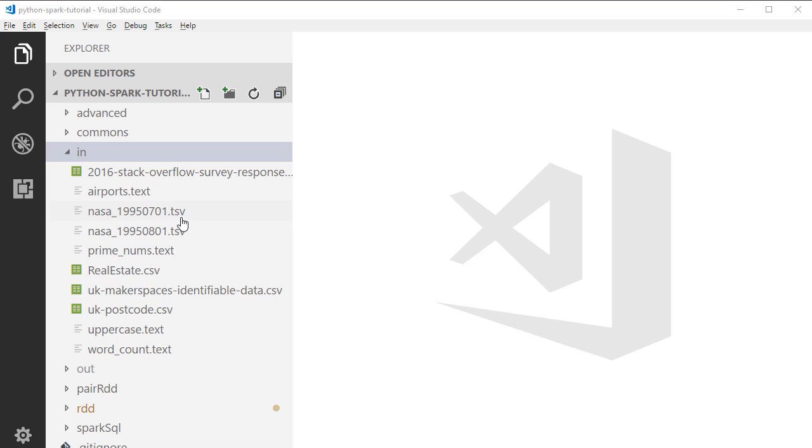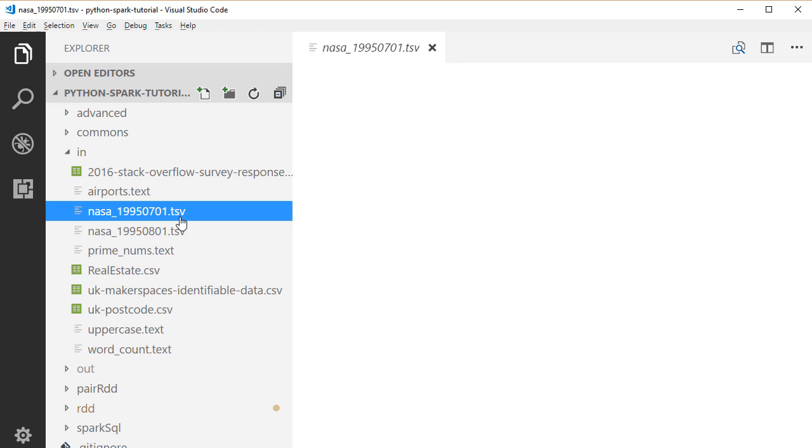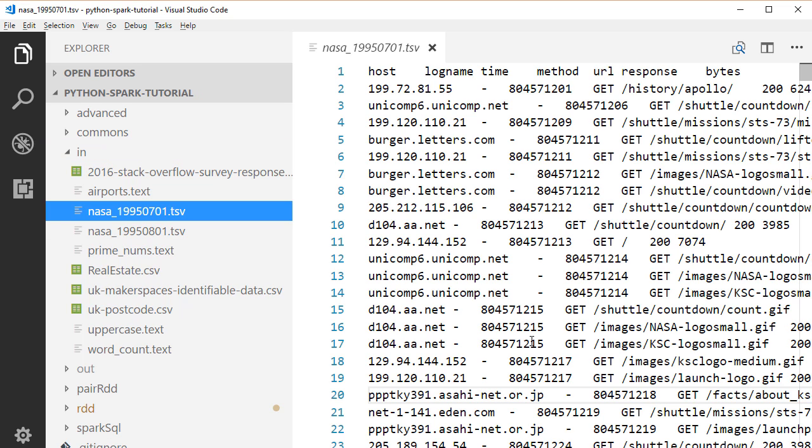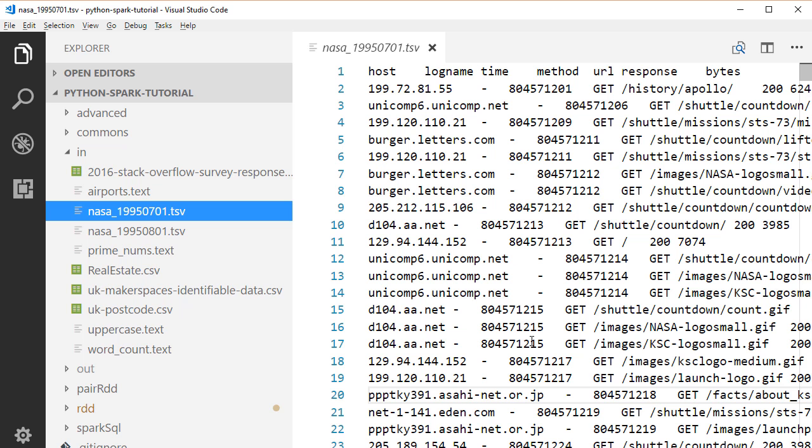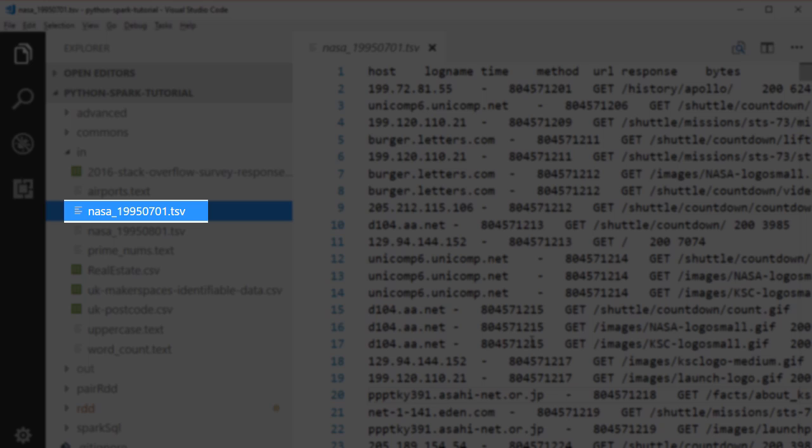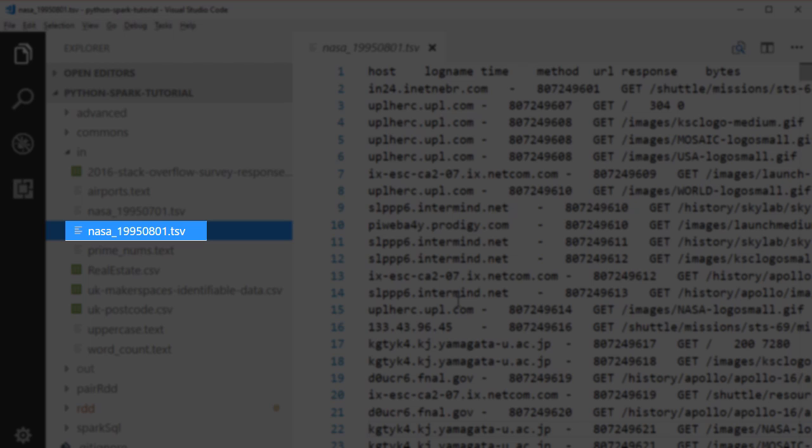Now, let's take a look at a real-life example. Here we have two tab-separated proxy log files from one of NASA's Apache servers. The proxy log file contains the hostname, logname, time, the HTTP method, the URL, response code, and the number of bytes. We have two log files. One contains 10,000 log lines collected on July 1, 1995. The other one contains 10,000 log files collected on August 1, 1995.